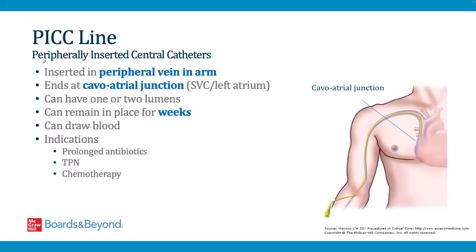A PICC line, or peripherally inserted central catheter, is a type of central venous catheter inserted through a peripheral vein in the arm. The catheter is threaded up through the axilla and into the cavoatrial junction — the junction of the superior vena cava and the right atrium. These catheters can have one or two lumens and can remain in place for weeks. Blood can also be drawn from PICC lines, unlike peripheral IVs, which are generally not used to draw blood.